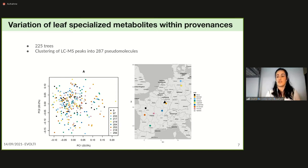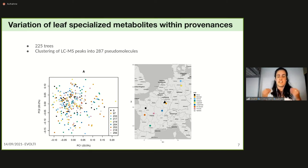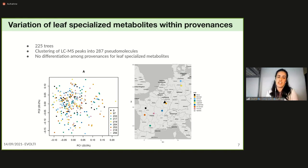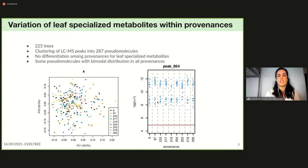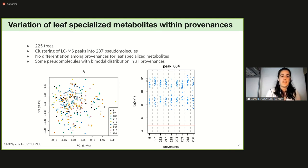Each dot corresponds to a tree colored by provenance of origin, matching the same colors on the map. This analysis reveals no differences between provenances, confirmed by an analysis of variance not shown here. Some pseudomolecules even displayed a bimodal distribution: on the x-axis we have provenances, on the y-axis the log signal intensity of an LC-MS peak for 224 individuals, showing a bimodal distribution across all provenances.